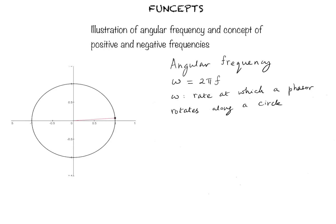Angular frequency is another way of representing or denoting the frequency of a signal. The relationship between angular frequency omega and the frequency f in hertz is given as omega equals 2 pi f. The angular frequency omega can be interpreted as the rate at which a phasor, as shown by the red line in this figure, rotates along the circle. The number of rotations this rotating phasor completes per second denotes the angular frequency.